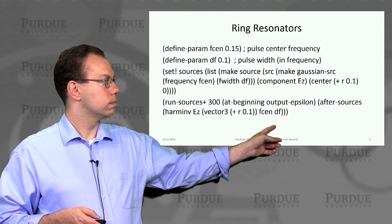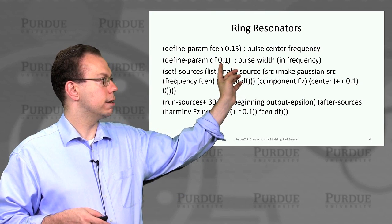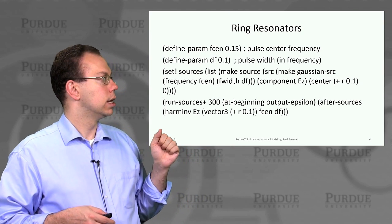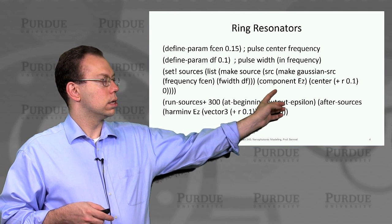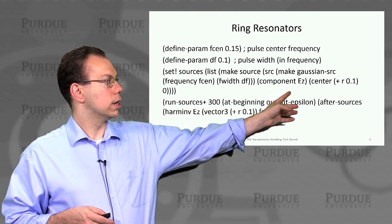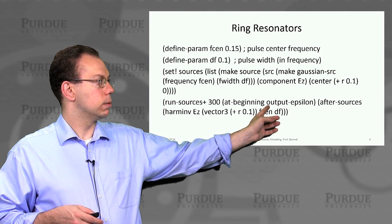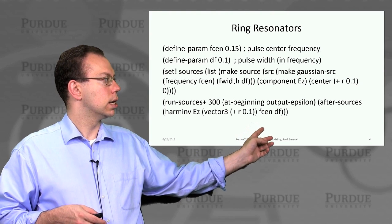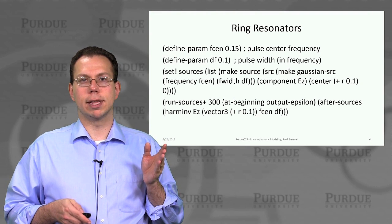Then you set up the PML. Here we're actually setting up the pulse to excite the source. You can see from df being 0.1 and fcen equal to 0.15 that it's a very broadband pulse. We make it out of a Gaussian source, and it's centered close to the inner edge of the ring at r plus 0.1. Then we run the whole system for 300 time steps beyond the end of the sources, output the epsilon, and output the Ez field. That'll give us a good idea of what kind of modes are being produced by the system.